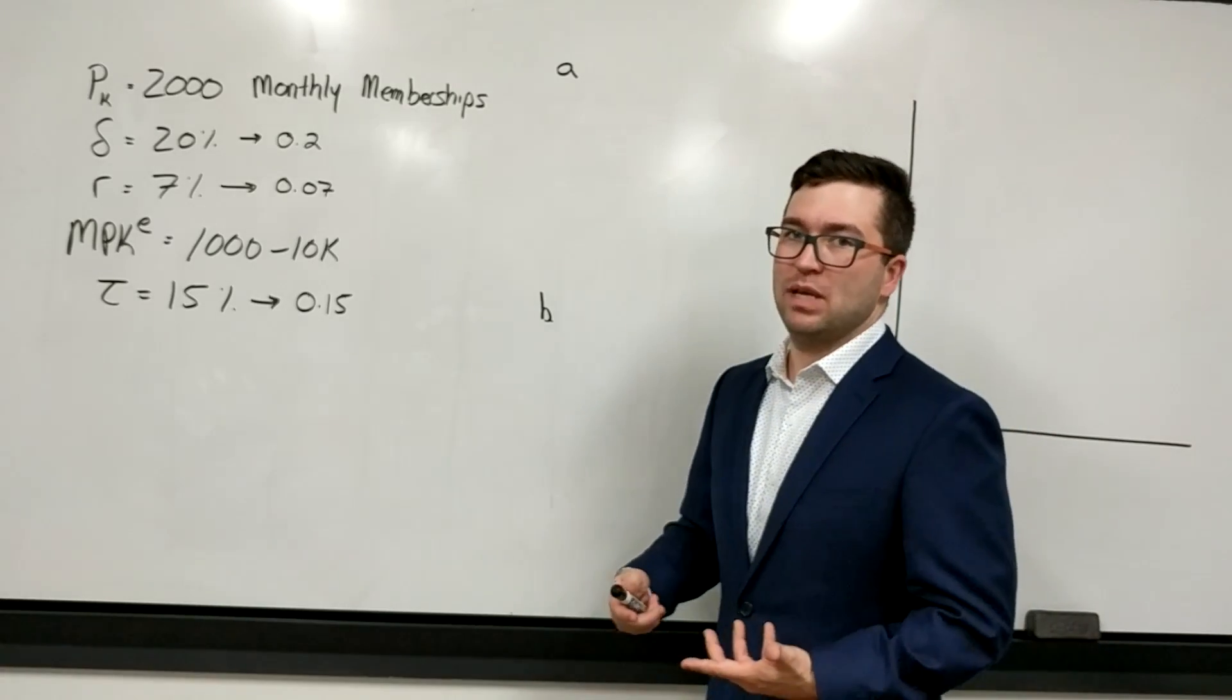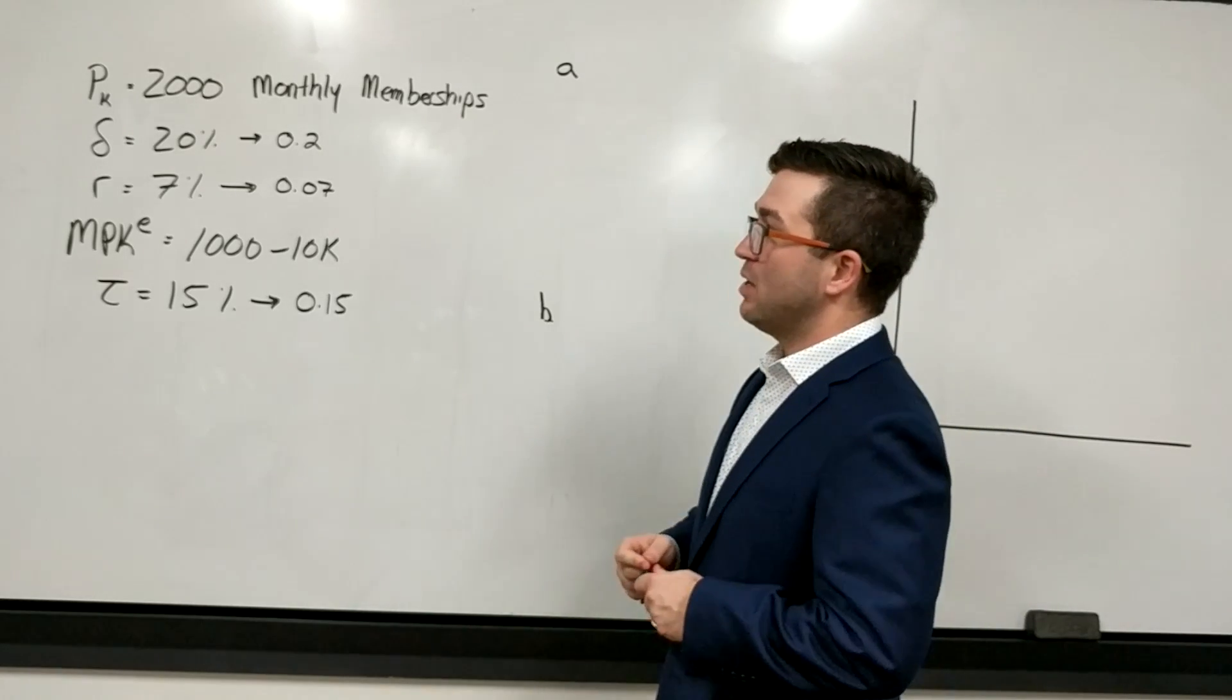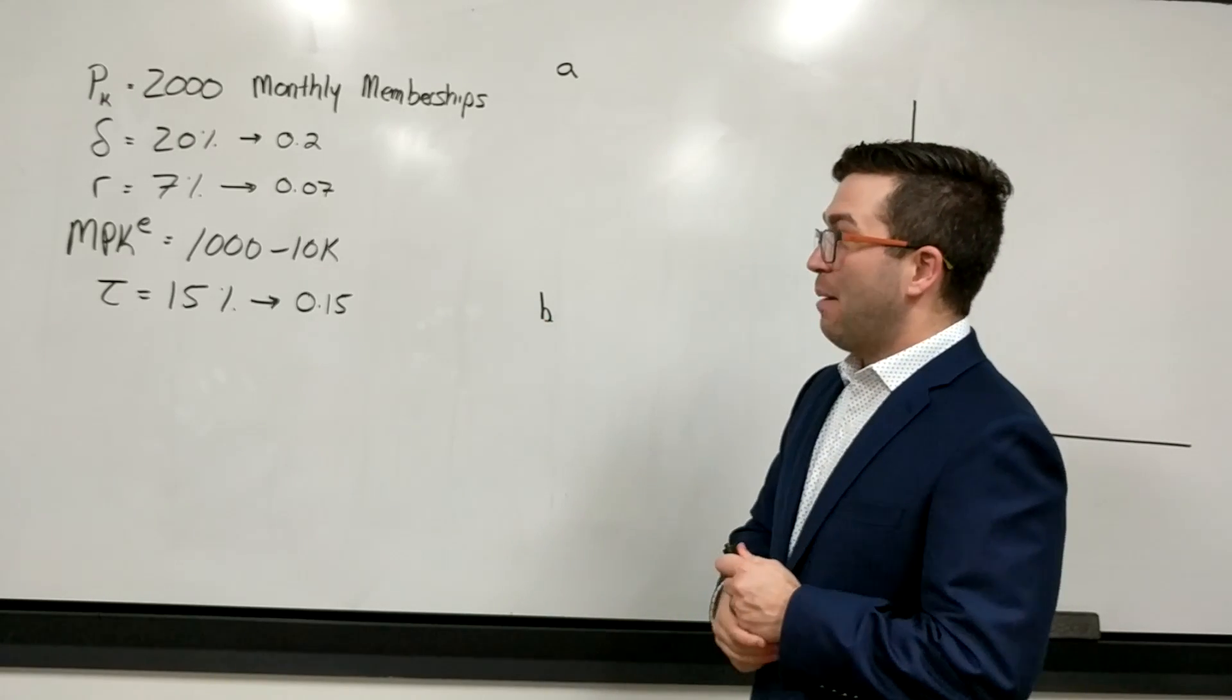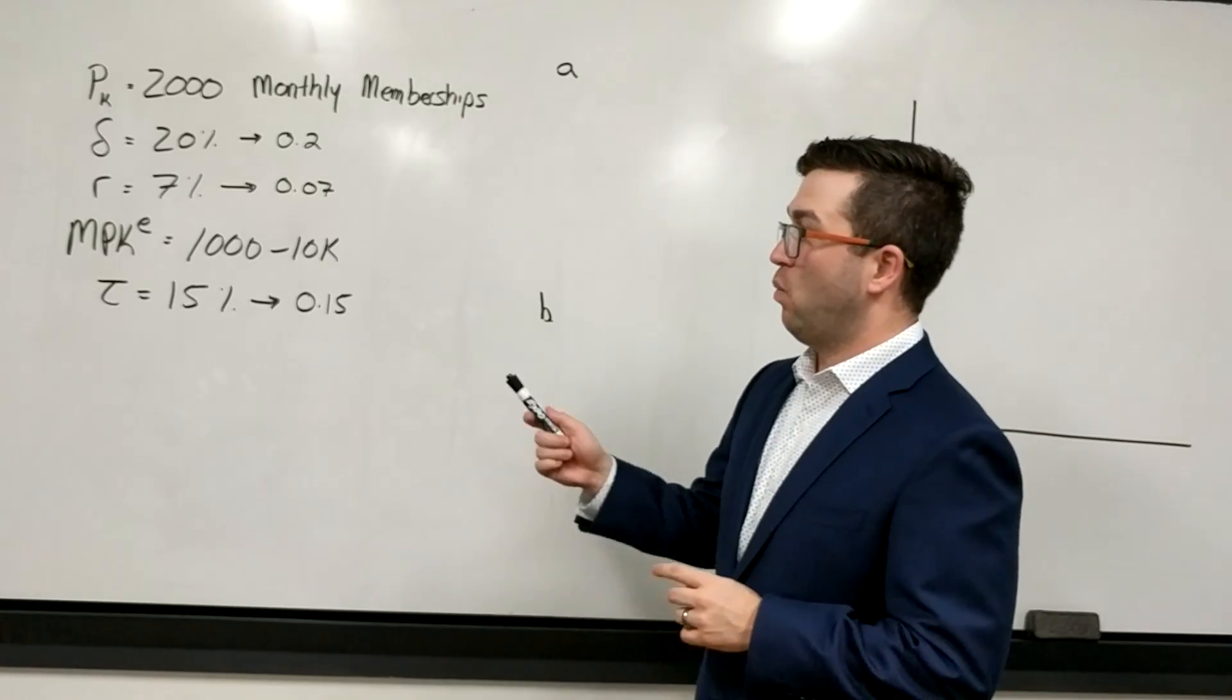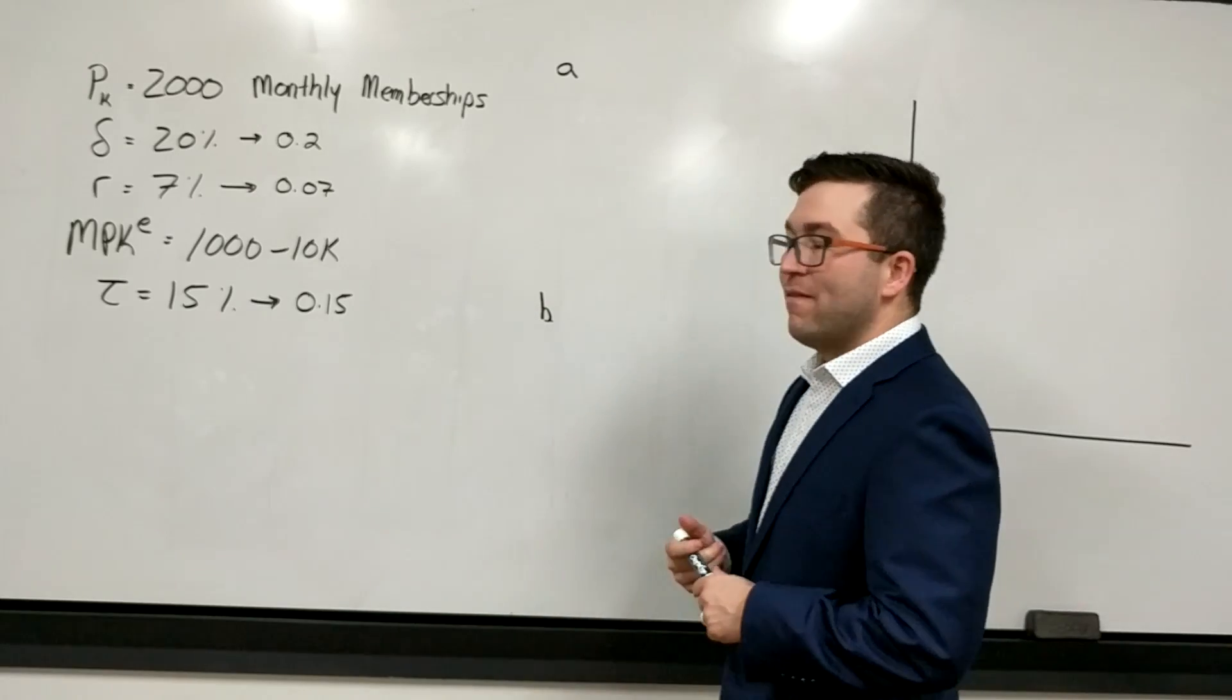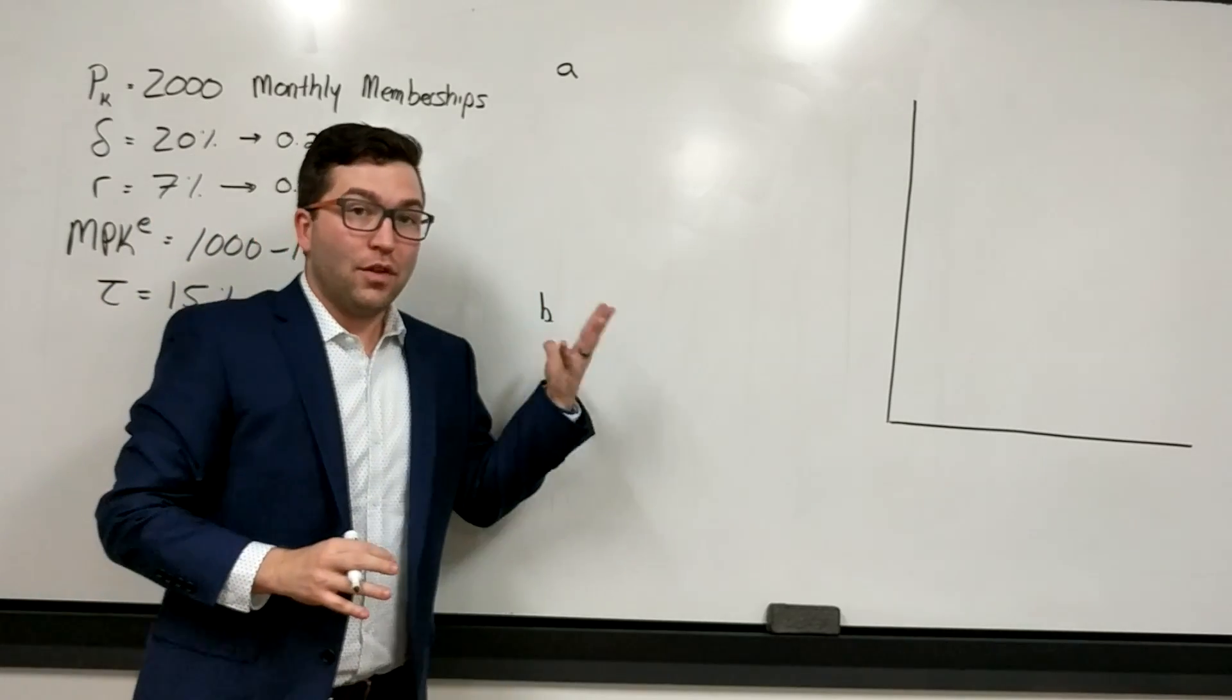Our capital is going to be treadmills, the number of treadmills that we're figuring out as a company, how many to purchase. We have the depreciation rate at 20%, which is 0.2, the real interest rate 7%, or 0.07. The marginal product of capital, or expected marginal product of capital, is given as an equation of 1,000 minus 10K, and we have an effective business tax rate on revenues of 15%, or 0.15.